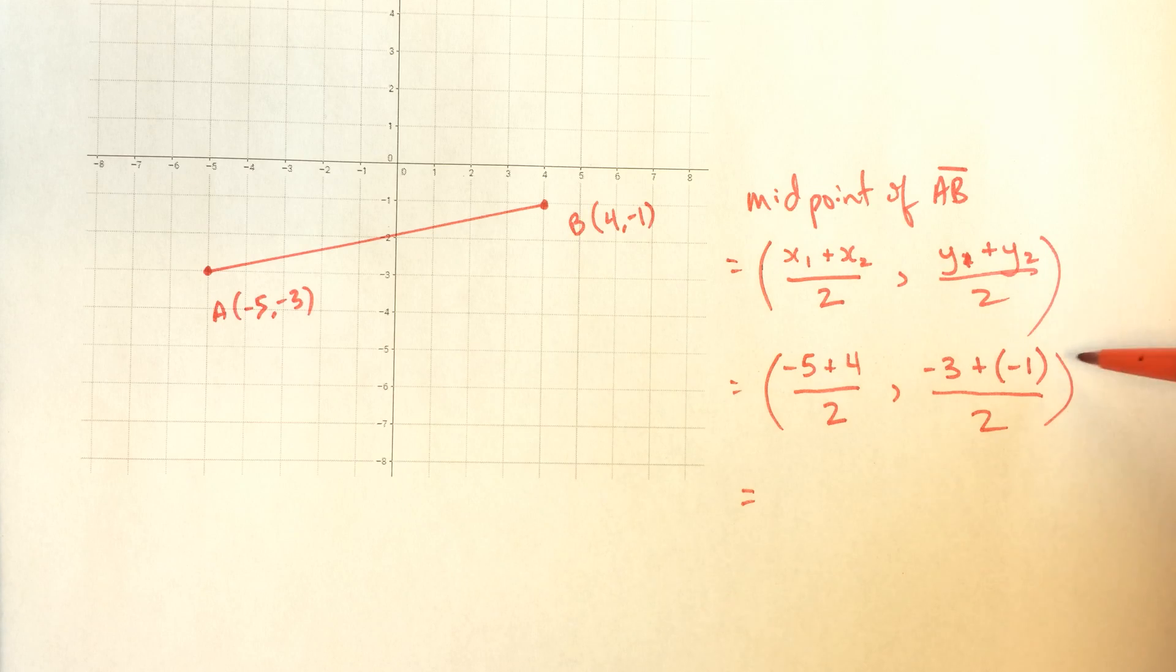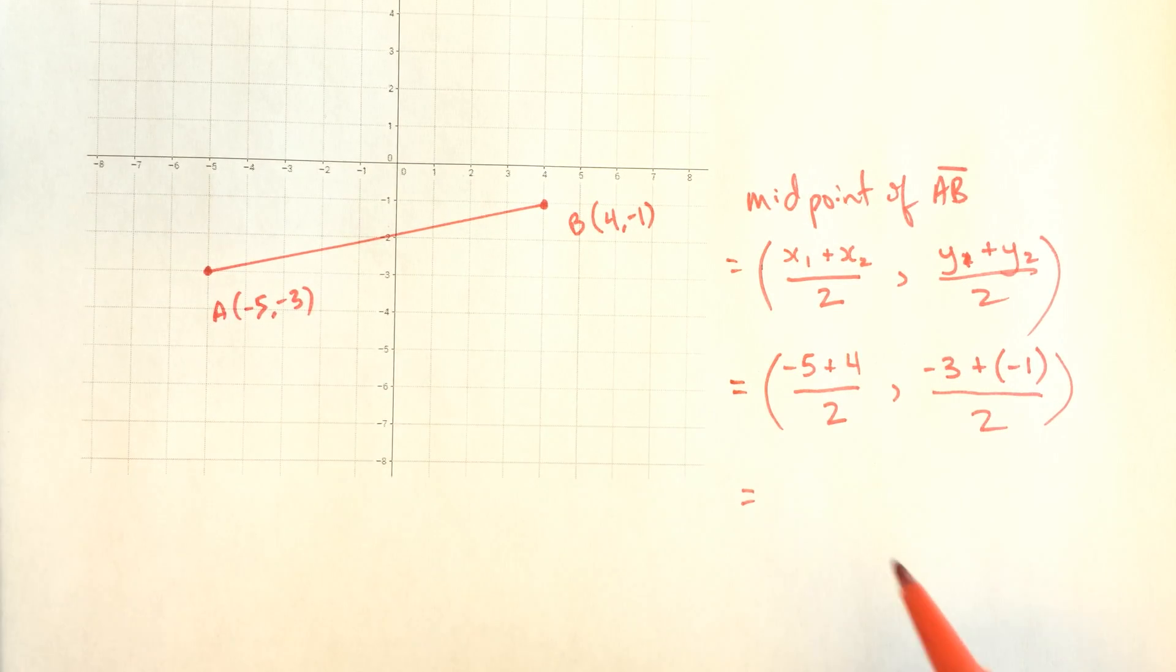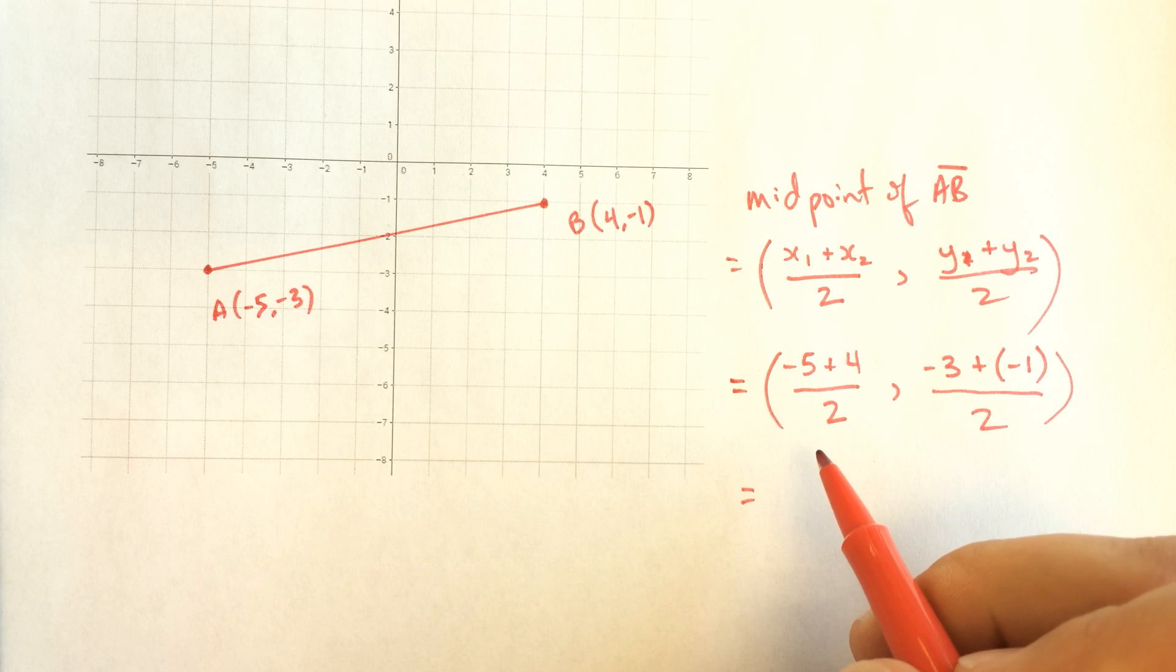Notice that I'm putting brackets all the time. I'm putting my comma between the two halves of my coordinate pair all the time. And I'm putting equal signs here because these are all different representations of the same point. They're all equal.